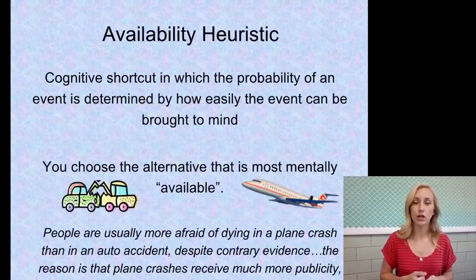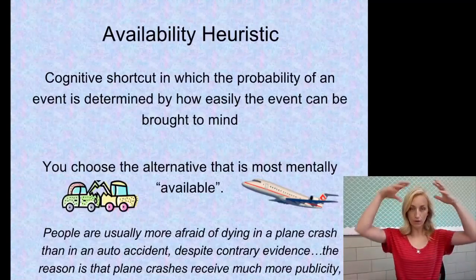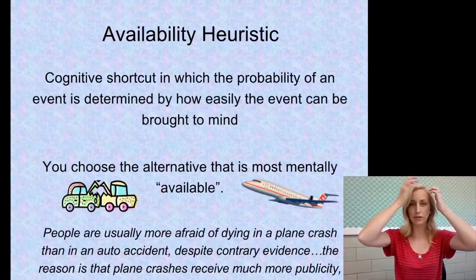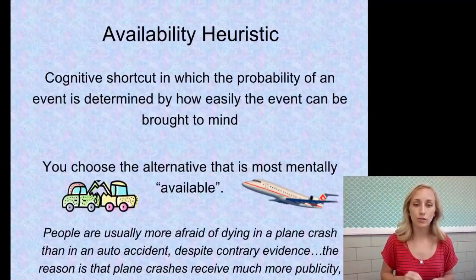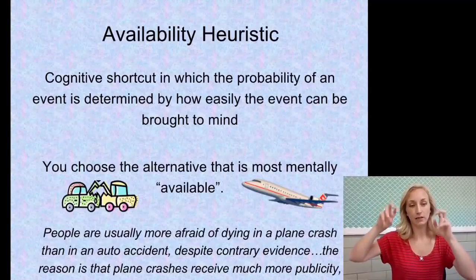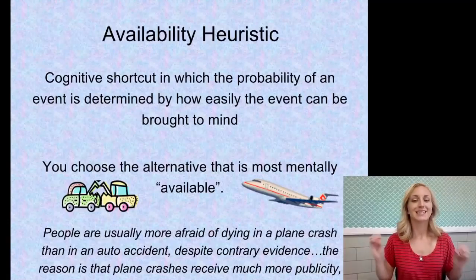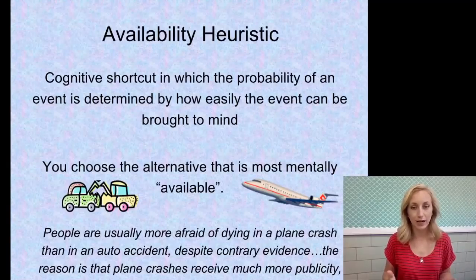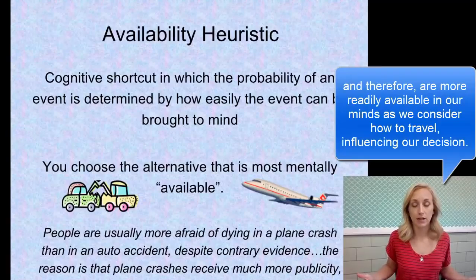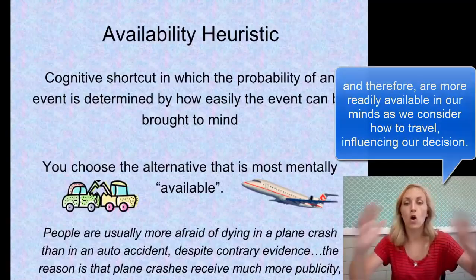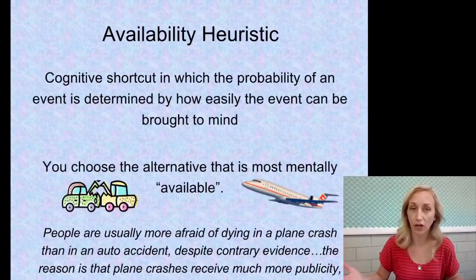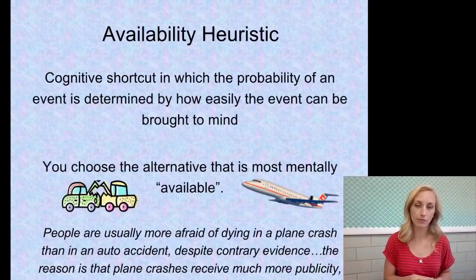Availability is a cognitive shortcut in which the probability of an event is determined by how easily it can be brought to mind — how 'available' the information is in your brain. You choose the alternative that is most mentally available. For example, people are usually more afraid of dying in a plane crash than in an auto accident, despite it being exponentially more dangerous to ride in a car. This is because plane crashes receive far more publicity, making them feel more likely even though you're vastly more likely to be harmed in a car crash.